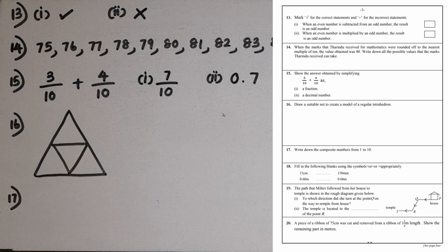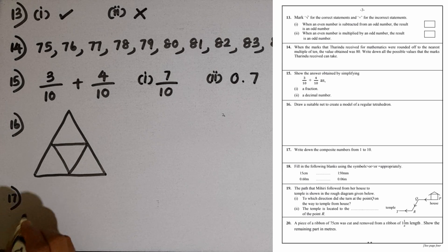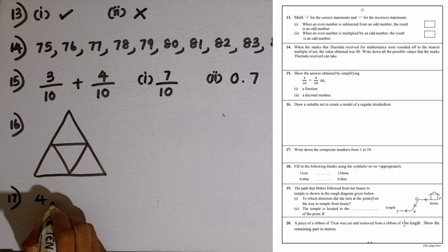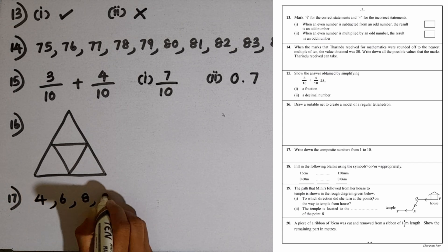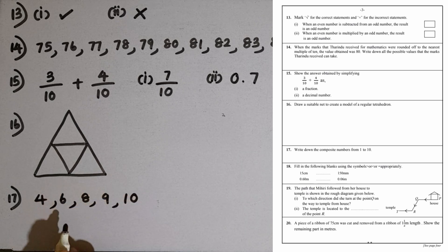Question number 17: Write down the composite numbers from 1 to 10. Composite numbers means the numbers with more than 2 factors. The first composite number is 4, then 6, then 8, 9, 10. As we are given from 1 to 10, we can also take 10.